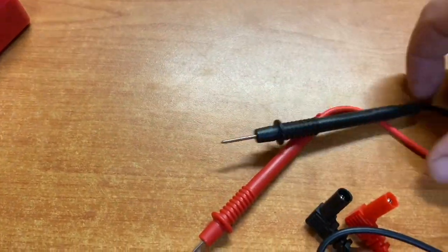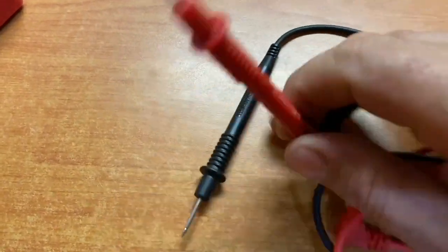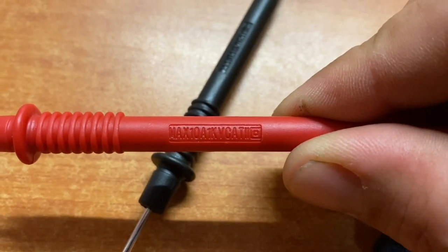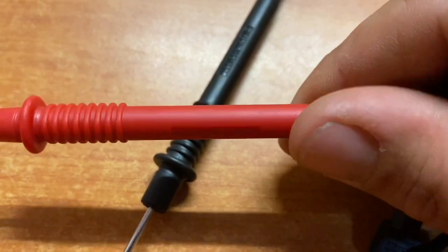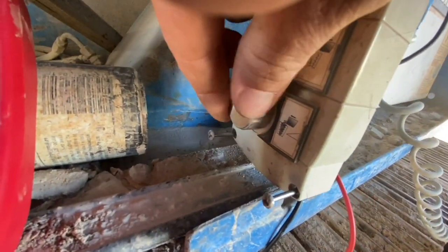The leads are pretty standard. There's not much to them. They're a CAT 2 rating like I said before. They fit nicely into the multimeter, they click in nice, and they feel like they've got a firm connection. So we'll try the multimeter out on a few things and see how it works.